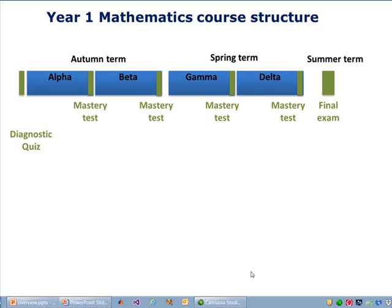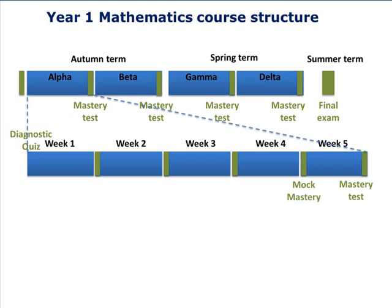The first year mathematics module is divided into four sub-modules called alpha, beta, gamma and delta. And each lasts five weeks, concluding with an online mastery assessment that must be passed with a mark of at least 80%. All four masteries must be passed to be allowed to sit the final end of year examination.